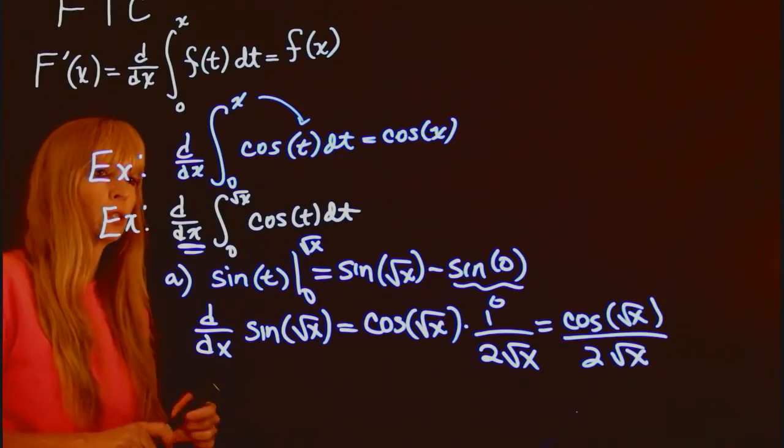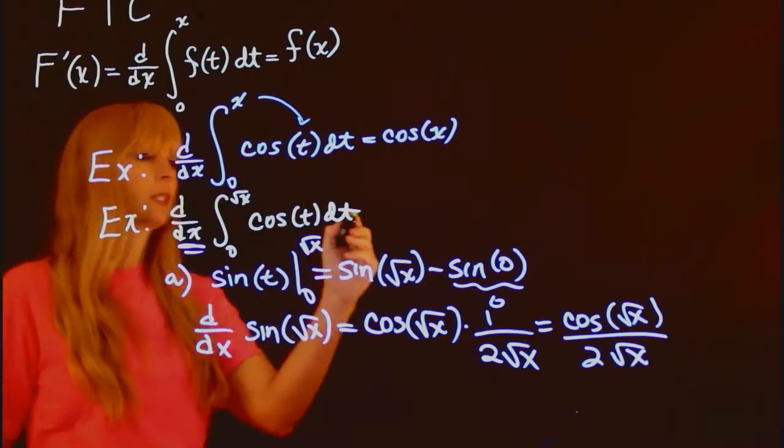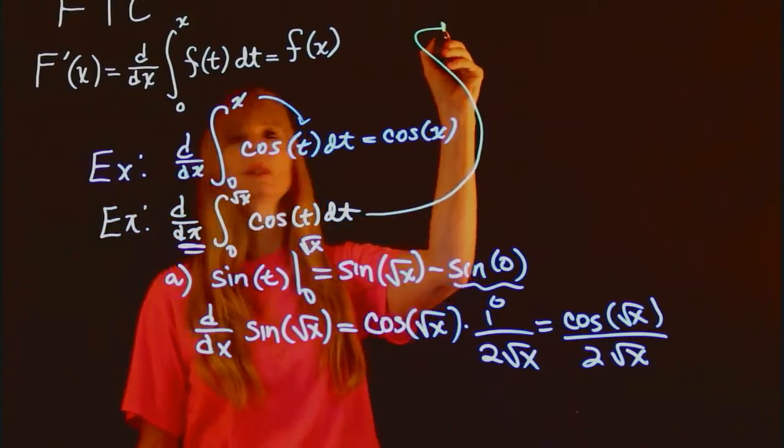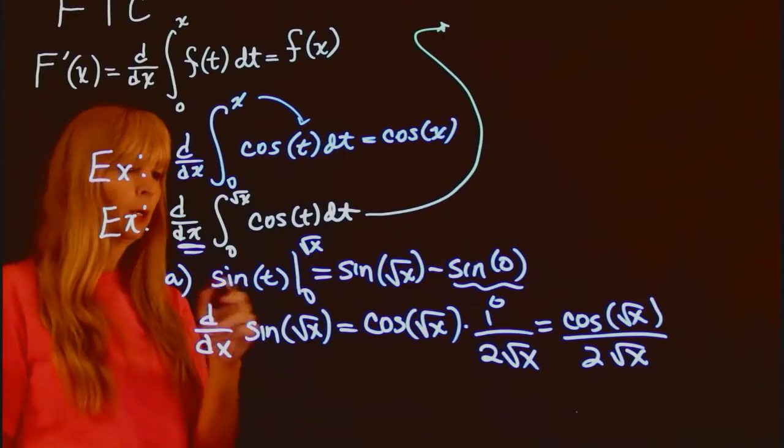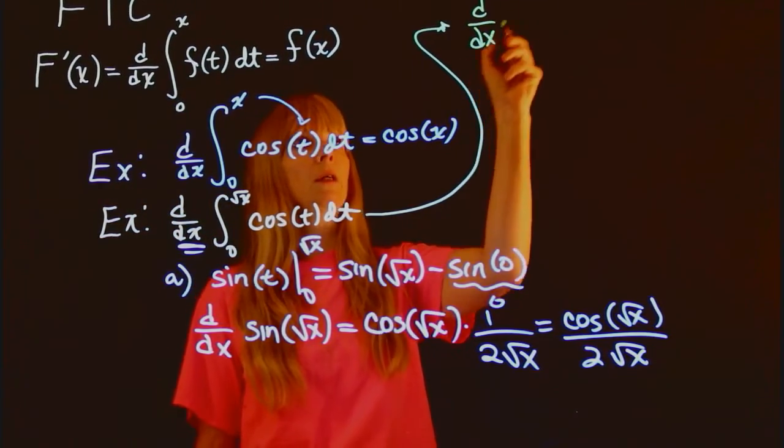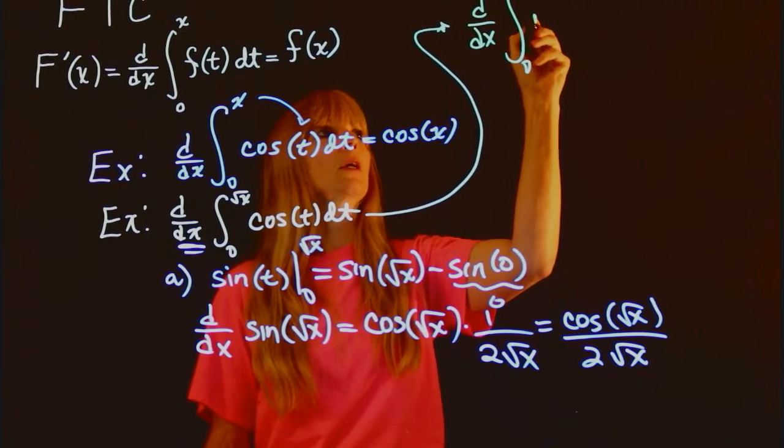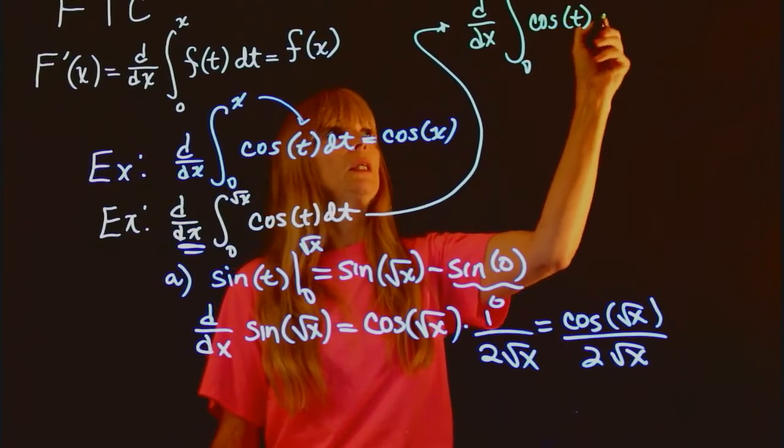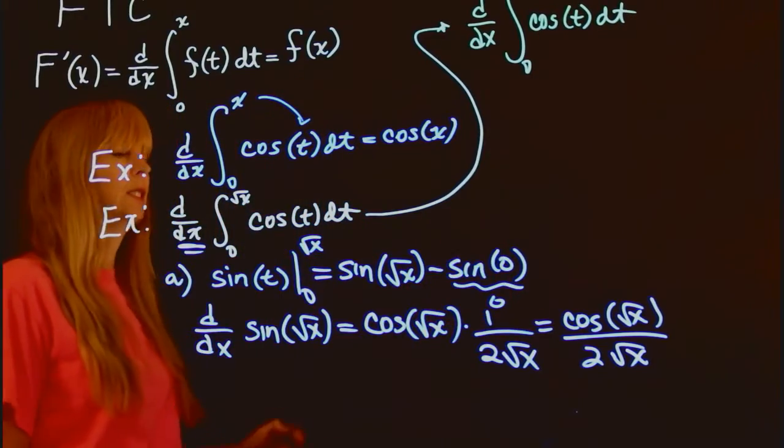Now you can also do this directly, which is using this fundamental theorem of calculus. So if I'm up here, then I'm saying I'm going to go ahead and rewrite this. So I have 0 to square root of x, cosine t dt.